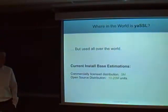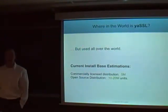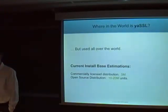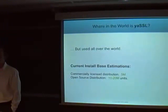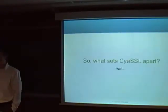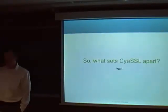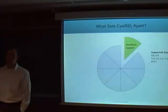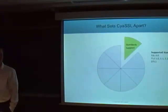These are some of our estimates for product usage. We think there are about 5 million units distributed and used in commercial projects, and anywhere from 10 to 20 million in open source projects. Those numbers are growing every year — this last year we've had an especially good year. So, what are some of the things that set CYASL apart? Here are eight items — not all of them, but some of the top ones.